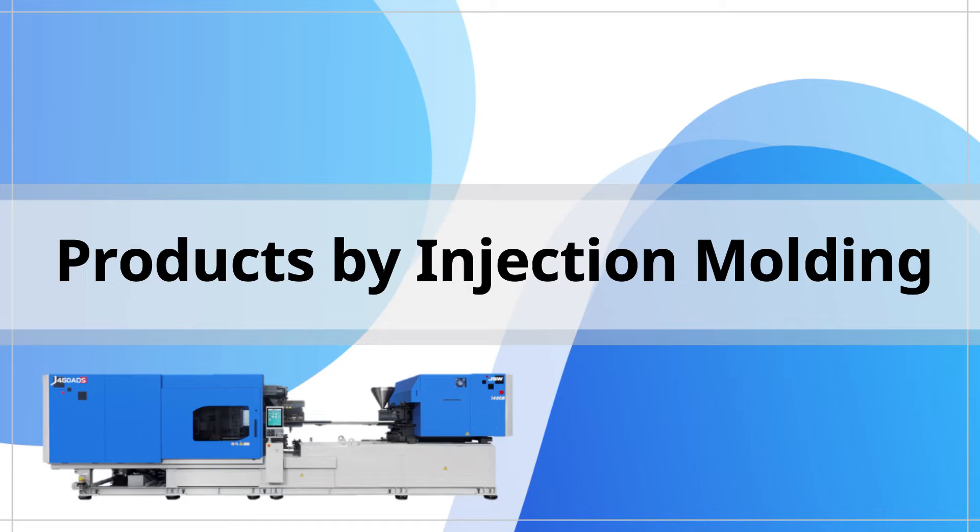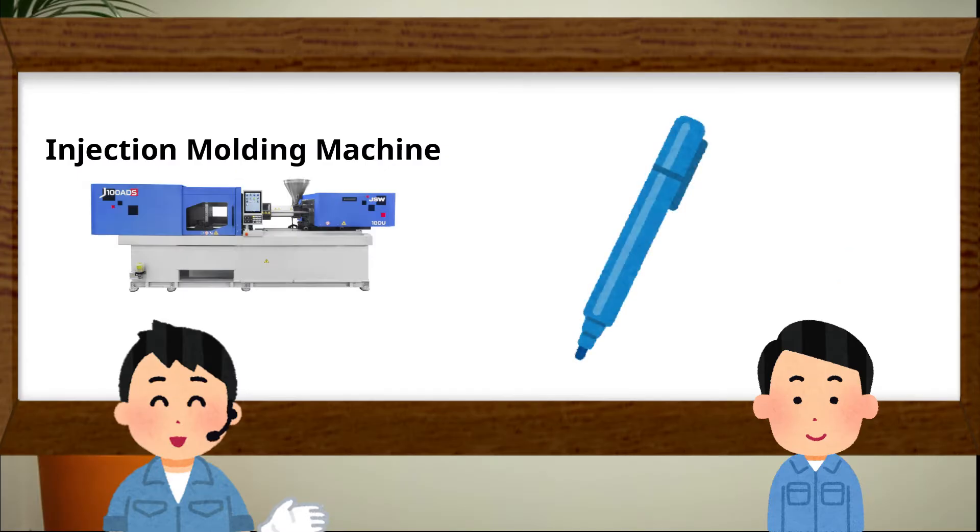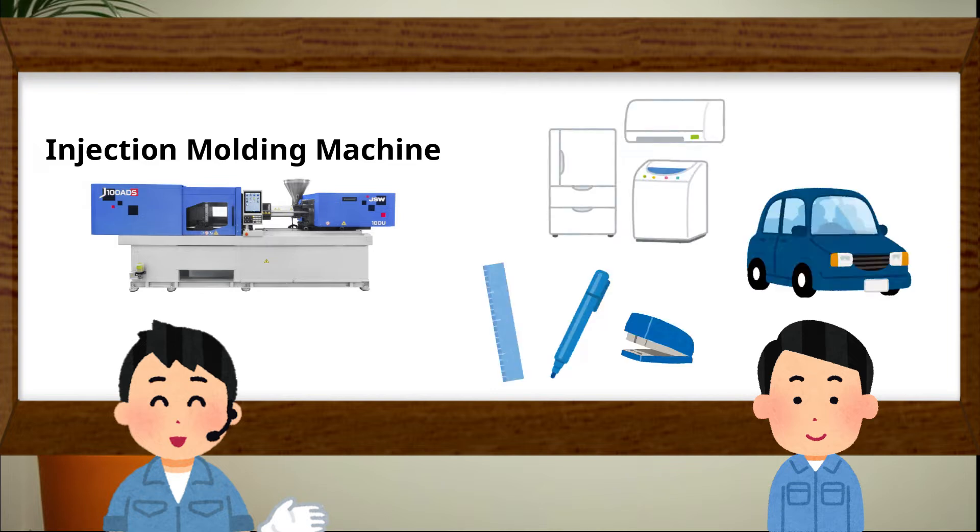Then, what kinds of product injection molding can make? This pen is made by injection molding machine, isn't it? Yes. By injection molding, you can make various kinds of plastic products such as parts for stationary, home appliance, automotive products and so on.